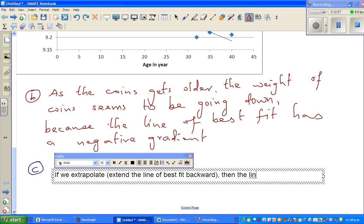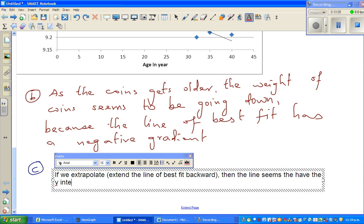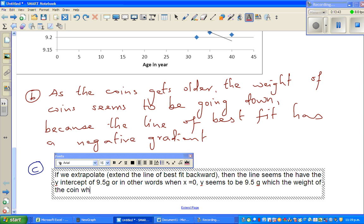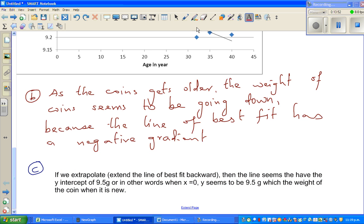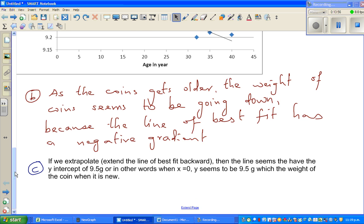Then it seems to intersect, to have the y-intercept of 9.5 grams or in other words when x is equal to zero, y seems to be 9.5 grams which is the weight of the coin when it is new. Hope this is explaining or this explains what the question is asking us to answer to questions.